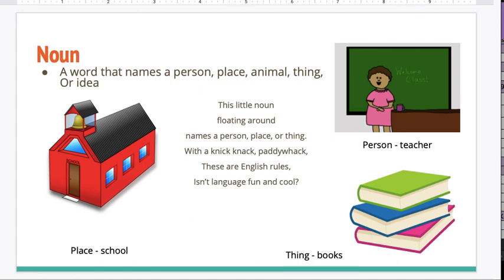An example of a place would be a school. A person might be a teacher. And a thing might be a stack of books.